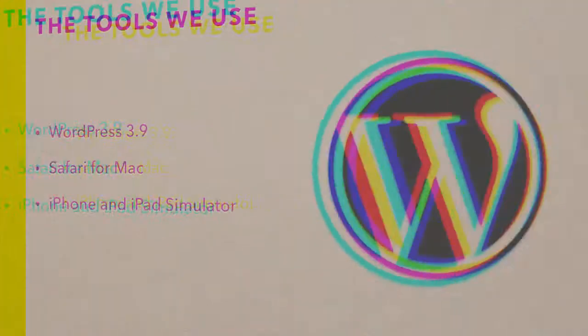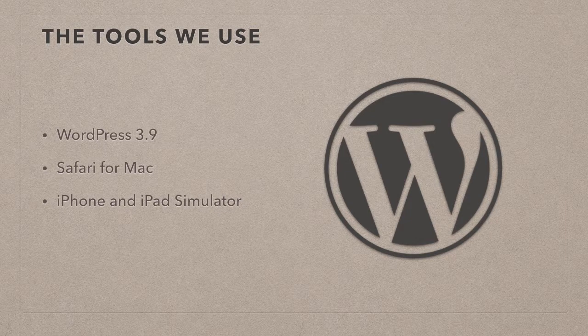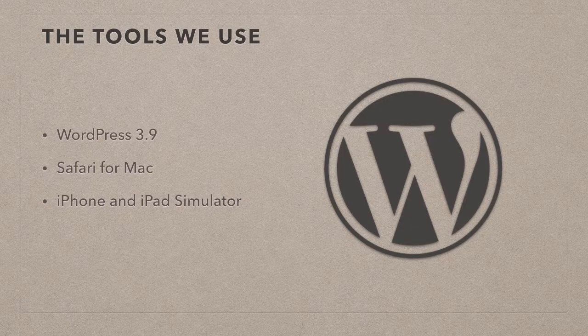The tools we're going to use are WordPress 3.9, which at the time of recording in June 2014 is the current version. I'm on a Mac using Safari, but this also works in Internet Explorer, Firefox, and Google Chrome. And to show you how mobile-friendly 2013 is, I'll also show you the same website on an iPhone and iPad simulator. Interested? Let's get started.